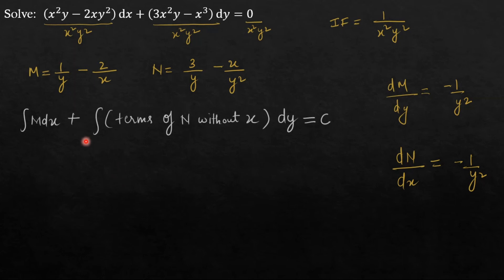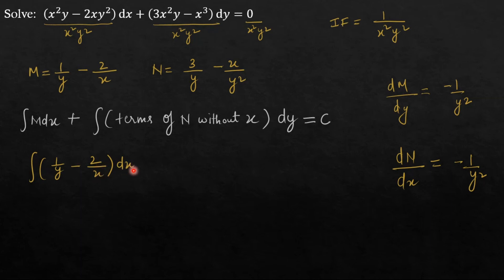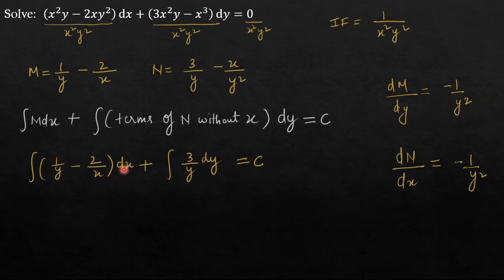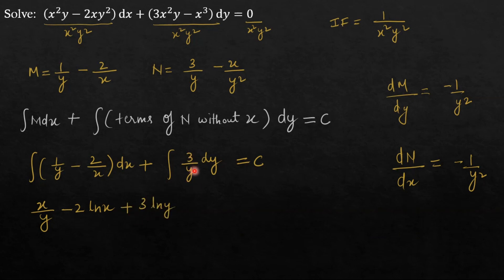Now we apply the solution formula: ∫M dx + ∫(terms of N without x) dy = constant. Substituting M, we get ∫(1/y − 2/x) dx plus, from N, the only term without x is 3/y, so we add ∫(3/y) dy = constant. Treating y as constant while integrating with respect to x, we get x/y − 2 log x + 3 log y = c.